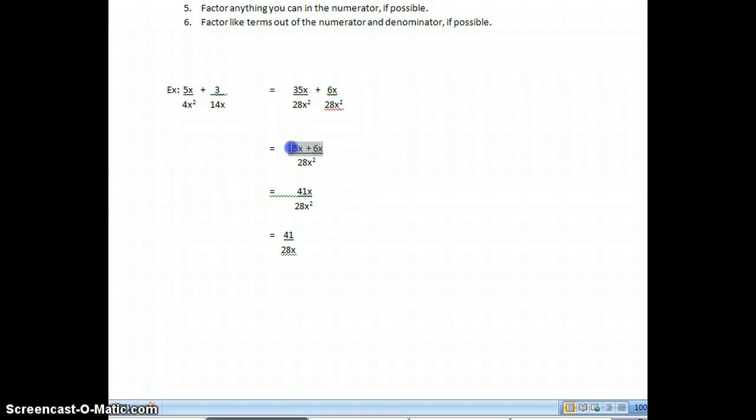35x plus 6x over 28x squared. Now both of these terms are alike, so I can combine them, give me 41x over 28x squared. Now I'm going to simplify. And I can't simplify with 41 and 28, but I can with the x to the 1 and x to the 2. I can simplify and divide out an x to the 1 on each of them, giving me just 41 over 28x. And that is my answer.